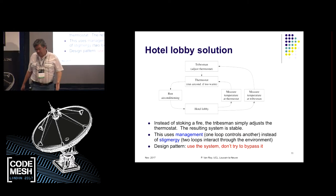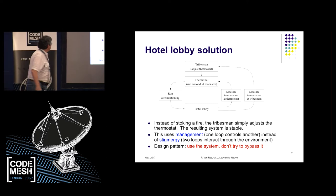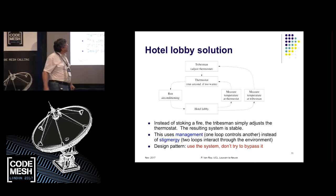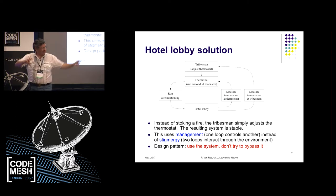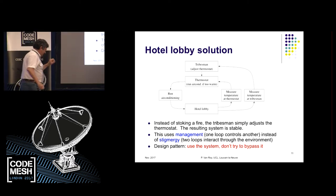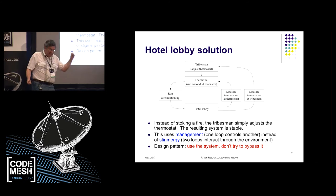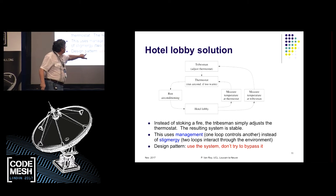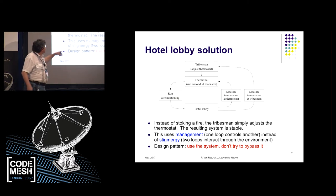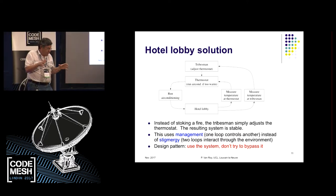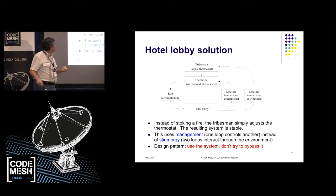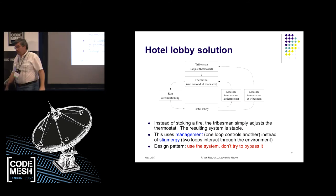The tribesman has to learn something — he has to understand there's a little device on the wall called the thermostat. But this is a stable solution. One lesson: use the system, don't bypass it. The inner air conditioning loop is a system; don't try to force it or bypass it, but use it. That's the lesson from this example.